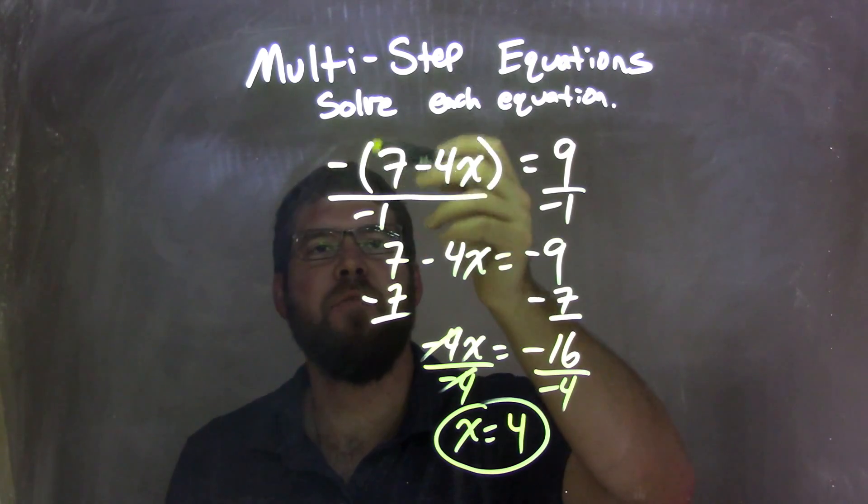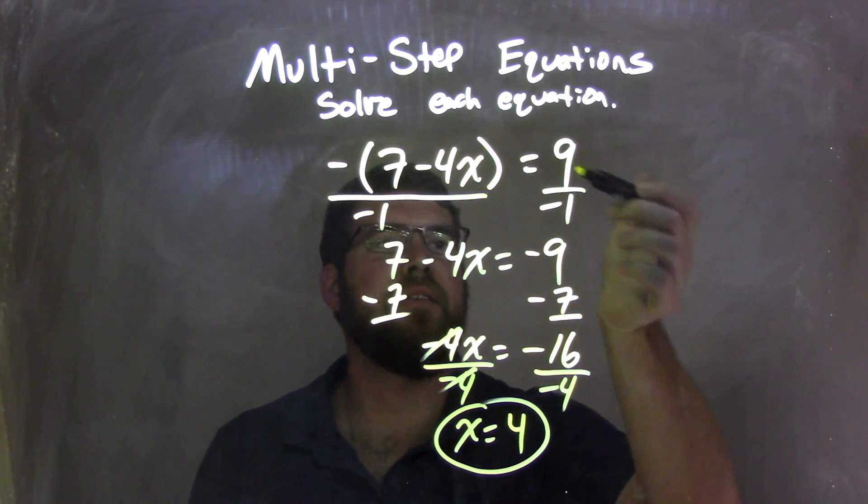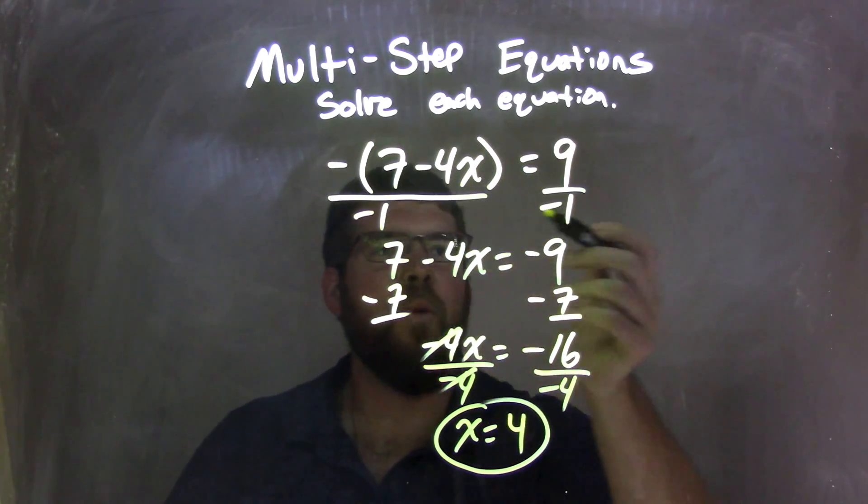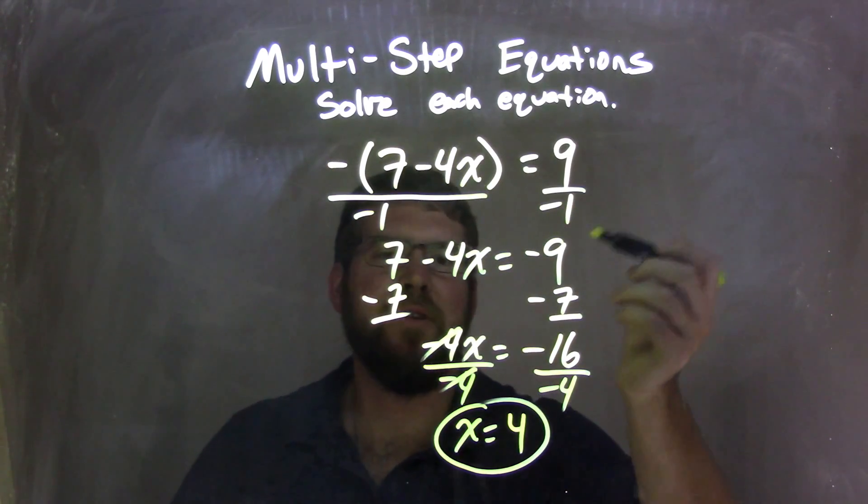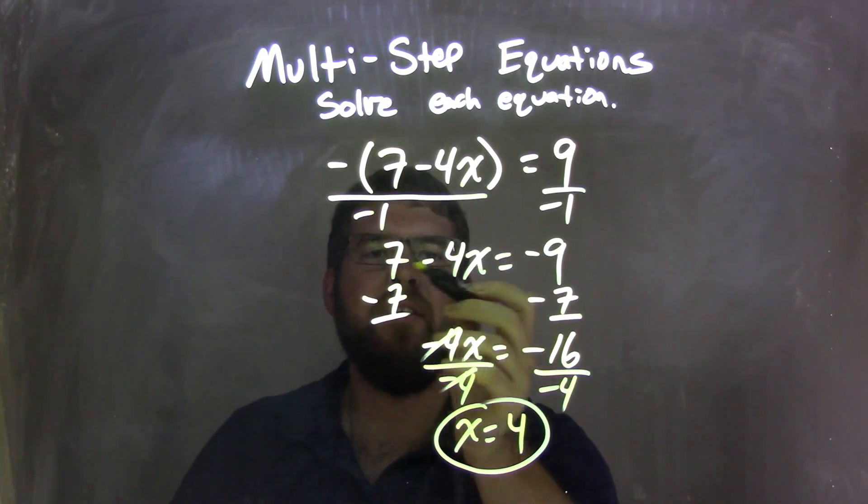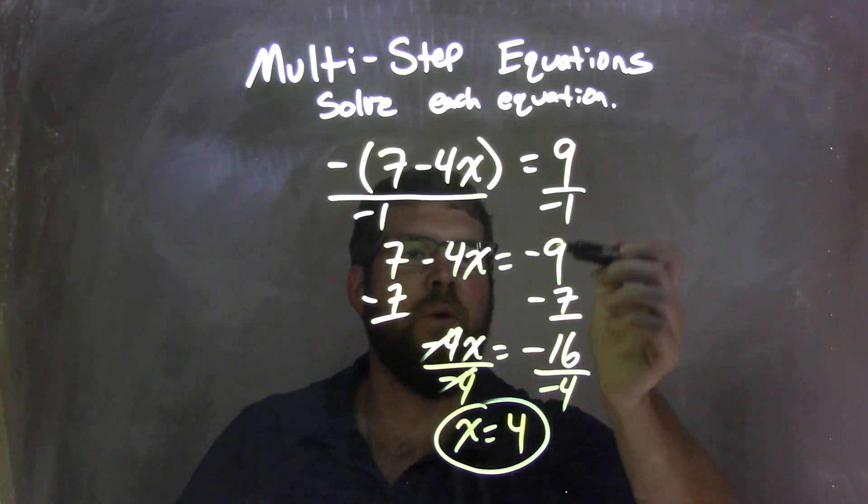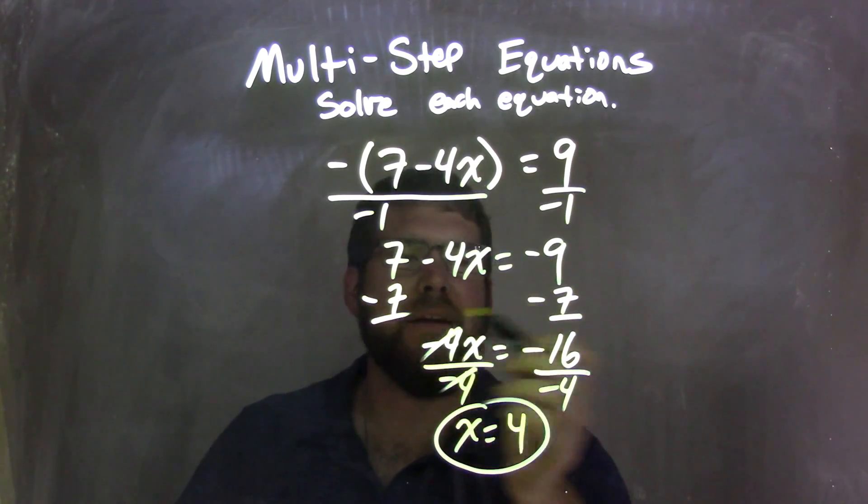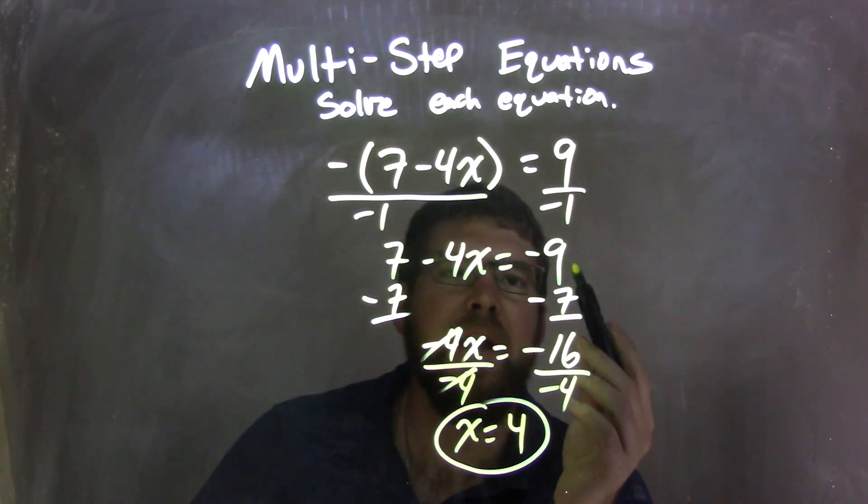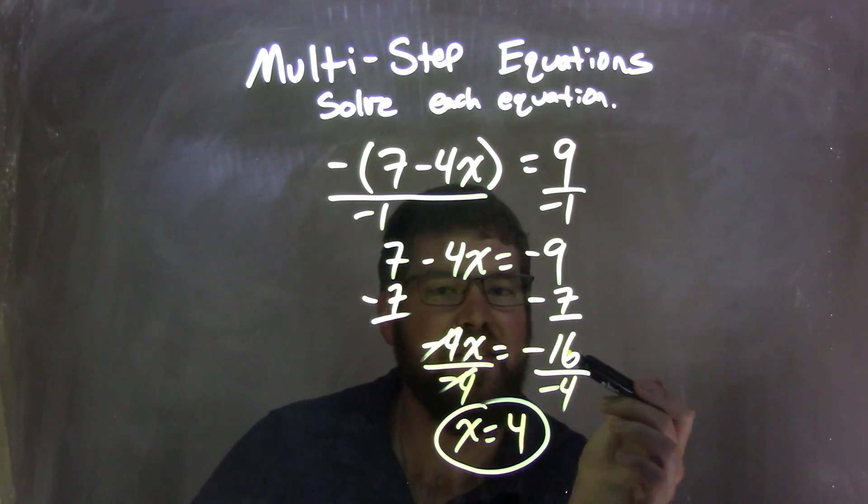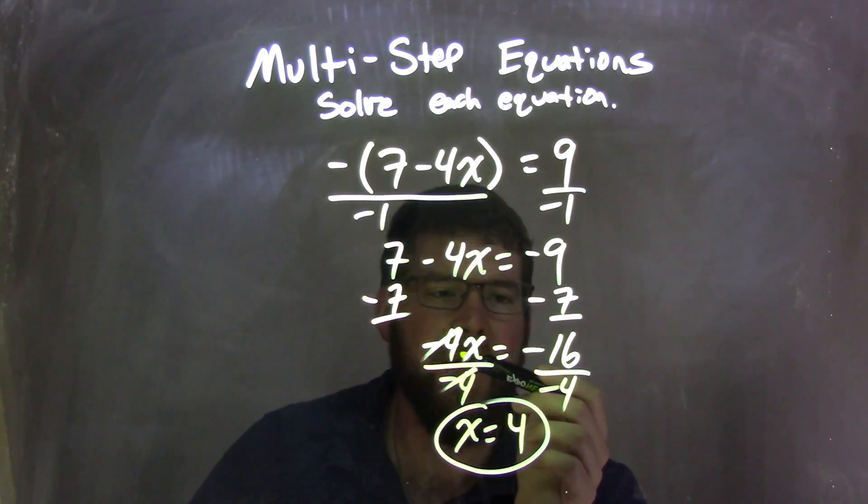Let's recap. We start with negative parentheses 7 minus 4x equals 9. I divide both sides by negative 1 to get that negative over to the right, leaving me with 7 minus 4x on the left, equals negative 9. I then subtracted 7 from both sides, so negative 9 minus 7 is negative 16, and I brought down the negative 4x.